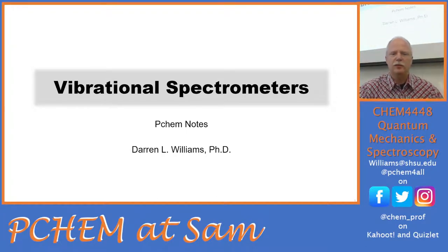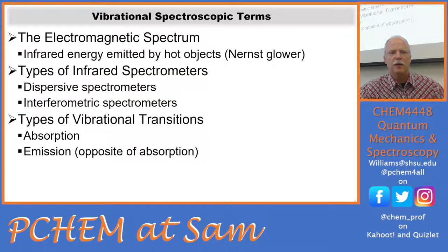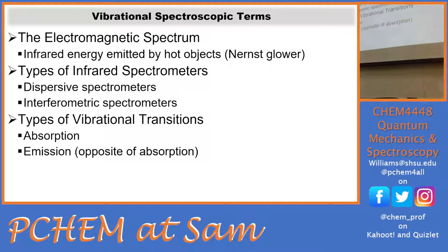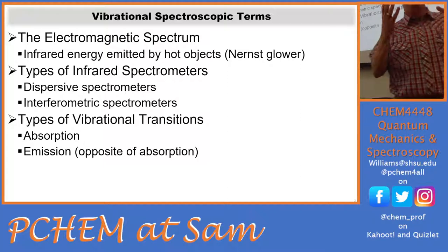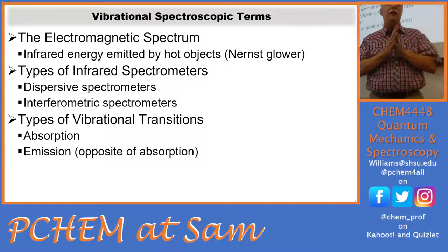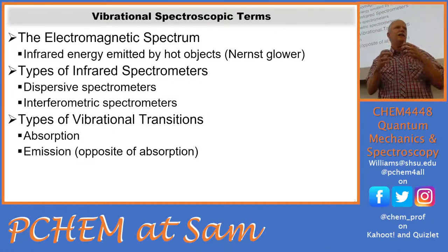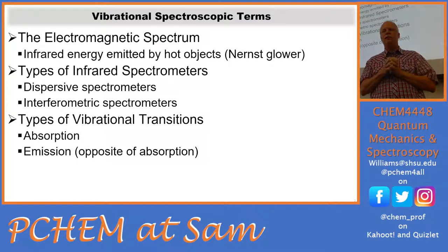In today's lecture we're going to talk about the electromagnetic spectrum and the energy given off by hot objects, which gives us infrared light. We think of infrared light as heat because it's typically how we detect it — we feel heat on our face. We have a couple of different ways of transferring energy in terms of heat.